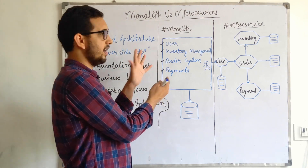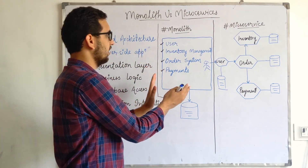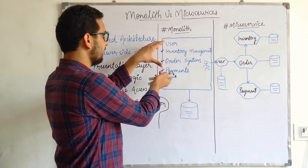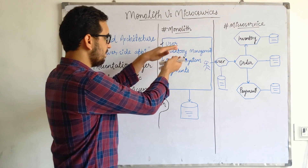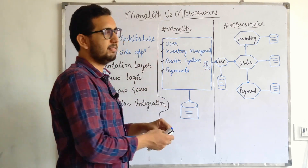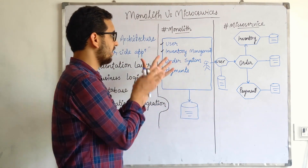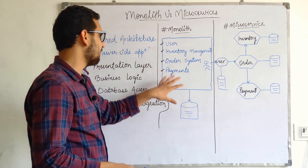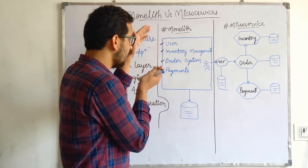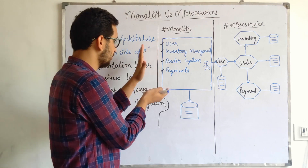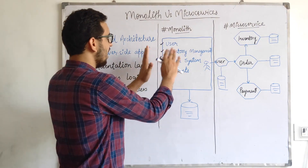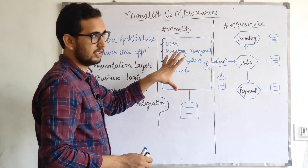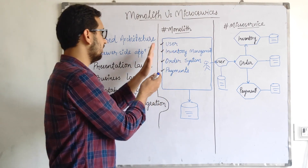Monolith has its own advantages: it's very simple to make changes in a single system and redeploy. But problems start when the product scales and hundreds of thousands of users arrive. The different components experience different kinds of traffic — inventory has more read traffic, the order system has more write traffic, and payments involve external user interaction. These fundamentally different use cases make it very hard to scale a monolith, since the scaling characteristics differ per component.